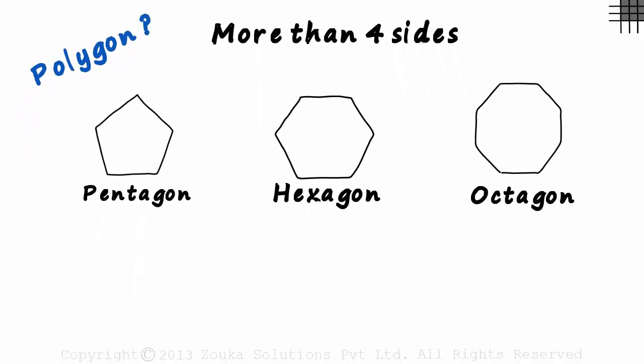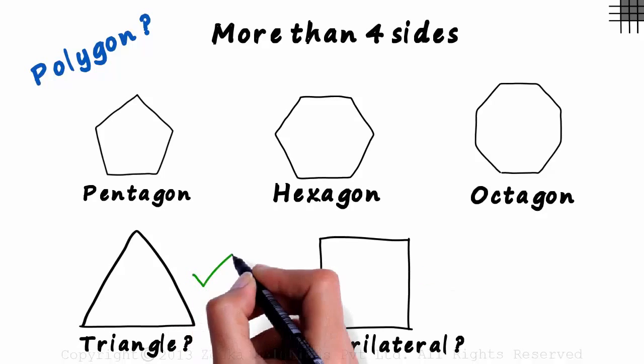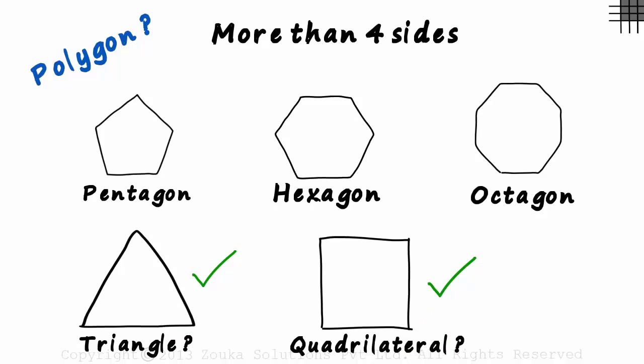What about a three-sided figure, a triangle? Or a four-sided figure, a quadrilateral? Are these two shapes called polygons? Yes, these two shapes are also called polygons.